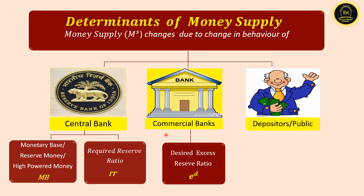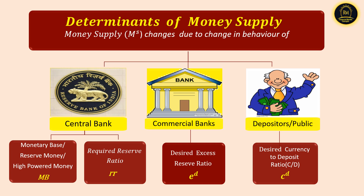The depositors or public determinant of money supply includes the desired currency to deposit ratio — that is, the depositor's choice to keep either currency in hand or deposits in banks. If they have a higher currency to deposit ratio, meaning a high preference for holding currency, it is going to reduce the money supply. Holding currency in hand instead of keeping it as a deposit in a bank is a leakage in the money supply process, as it reduces the money multiplier process by banks.